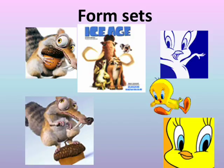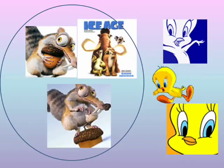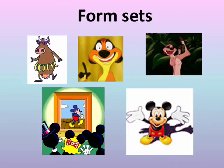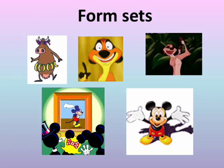Again we have two sets. The first set — it's written: Ice Age. The three pictures on the left-hand side are Ice Age. The three pictures on the right are about Tweety. I'll leave the rest for you to do on your own.